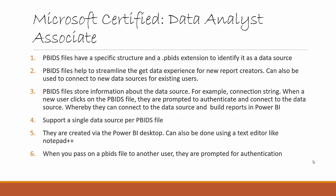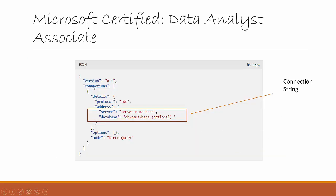A pbits file stores information about the data source — for example, the connection string. This file contains some metadata; it will not contain the login password but it will definitely contain the string to a particular source. You can create it using Power BI Desktop, which is the preferred way, but you can also create it with Notepad++ or any text editor if you know how to build it. This is what the structure looks like.